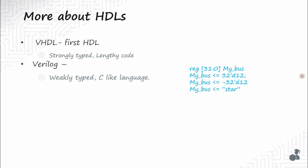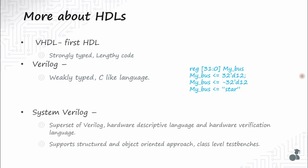SystemVerilog is a superset of Verilog and it is both a hardware descriptive language and a hardware verification language. Like Verilog, it supports module-level coding, and it also supports class-level coding or object-oriented coding. The object-oriented aspect in SystemVerilog is mostly used to write test benches, hence SystemVerilog is highly used for verification. SystemVerilog for design is almost the same as Verilog.